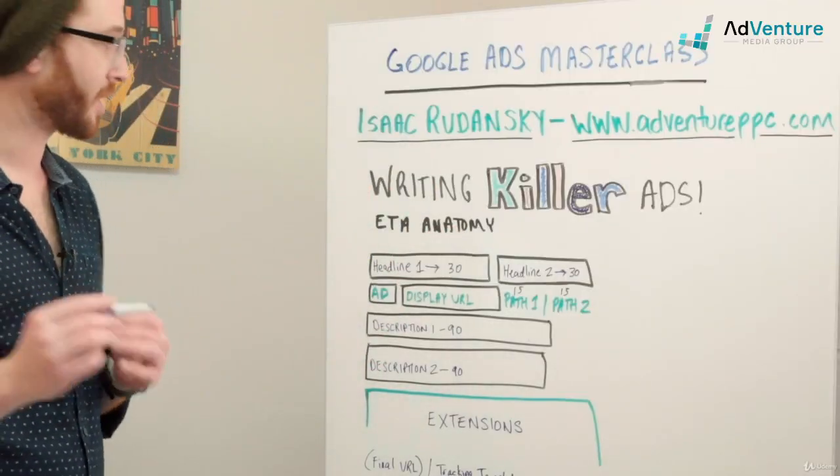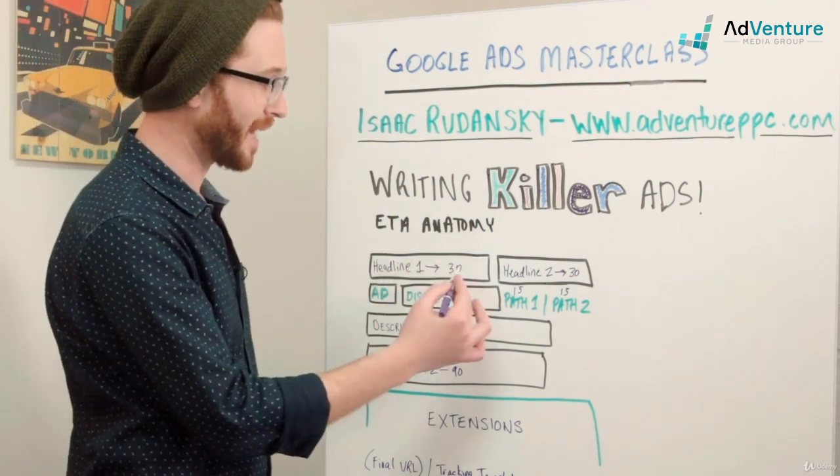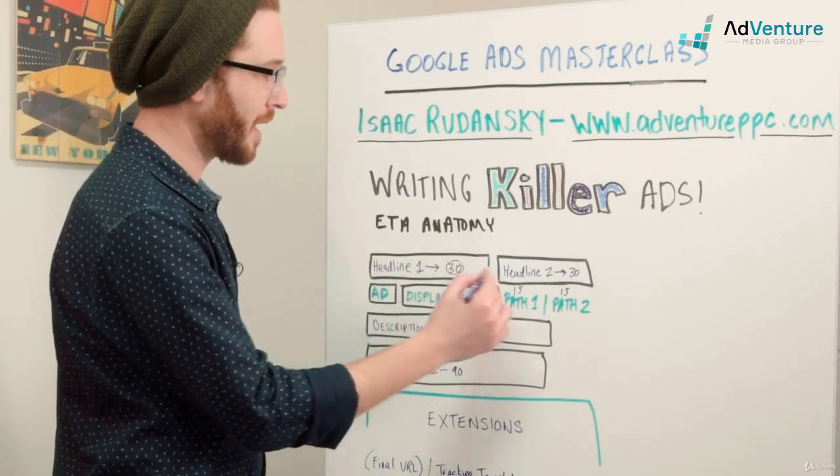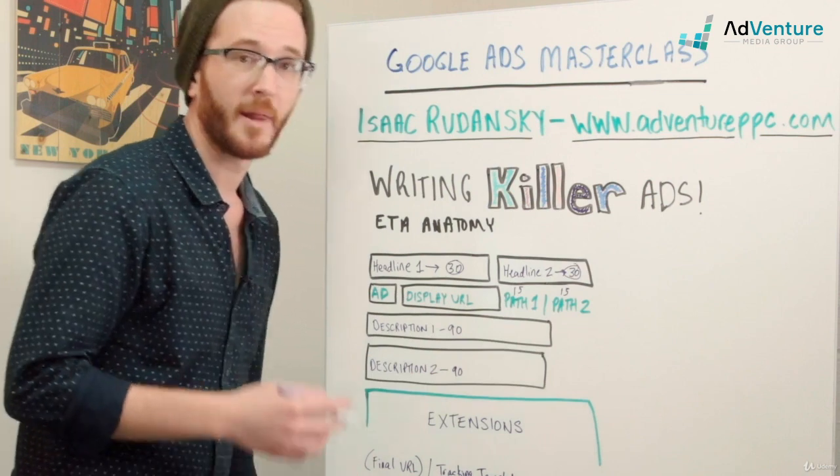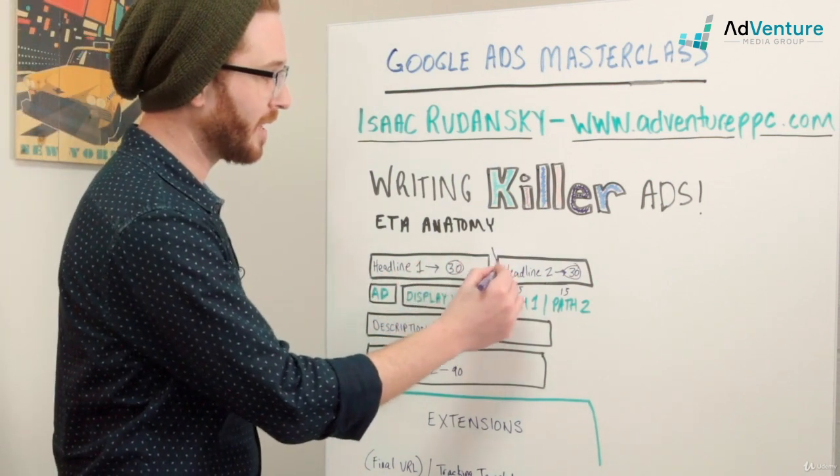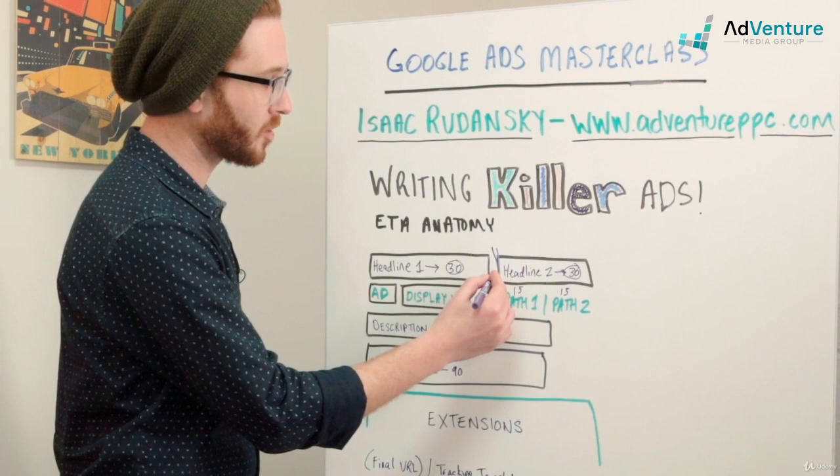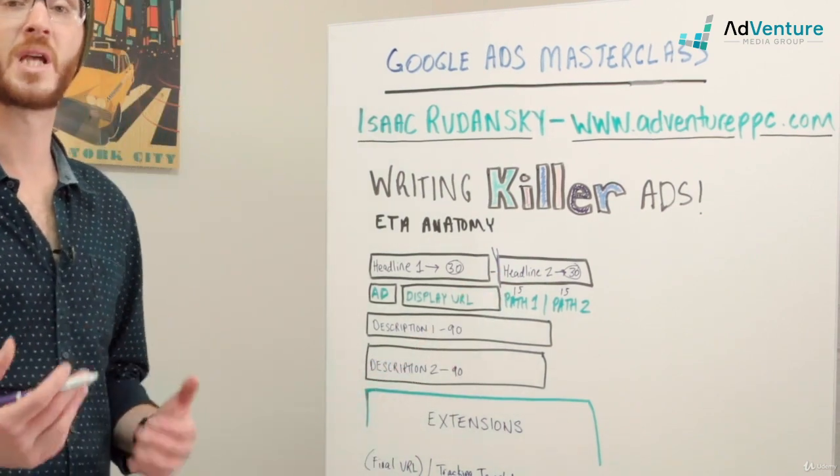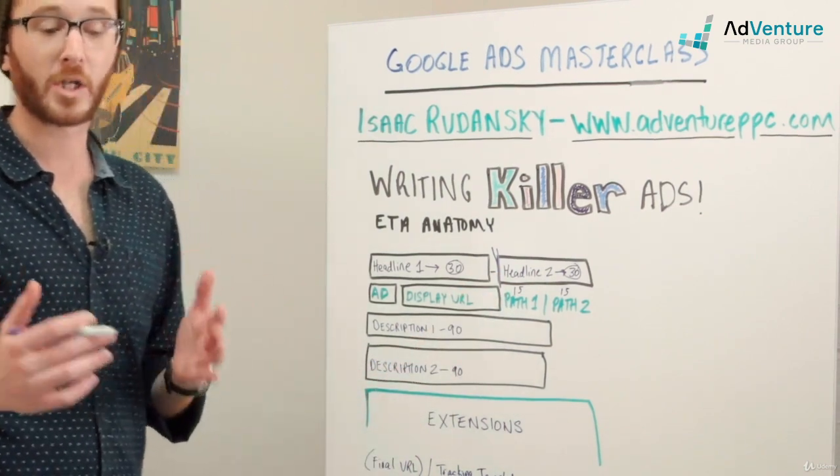You get two headlines. Each headline shows up at the top with a maximum of 30 characters. They're usually split with either a pipe or a dash between them, and when you create that ad in Google Ads you'll see that as a preview—usually this pipe symbol between the two headlines.